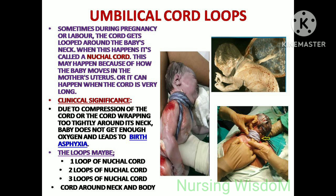Umbilical cord loops: sometimes during pregnancy or labor, the cord gets looped around the baby's neck — when this happens it's called a nuchal cord. This may occur because of how the baby moves in the mother's uterus, or when the cord is very long. Clinical significance: due to compression of the cord or the cord wrapping too tightly around the neck, the baby does not get enough oxygen, leading to birth asphyxia. The loops may be one, two, or three loops of nuchal cord, or cord around the neck and body.